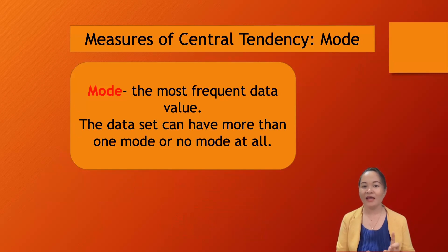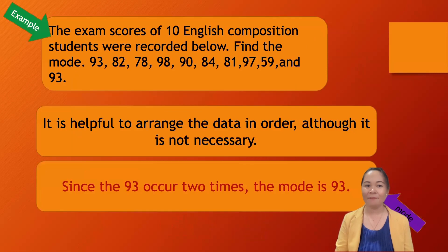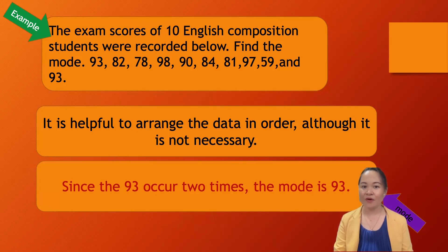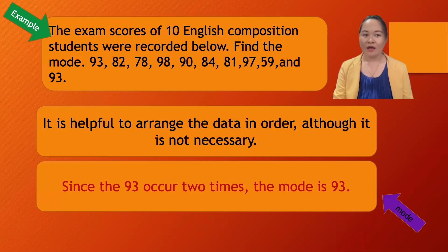Or it can have no mode at all. We have here an example: The exam scores of 10 English composition students were recorded below. Find the mode: 93, 82, 78, 98, 90, 84, 81, 97, 59, and 93.